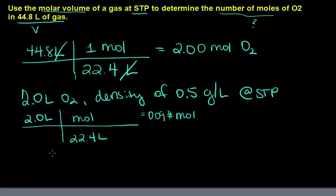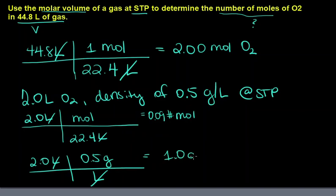And then we could figure out the grams the same way. 2.0 liters, 0.5 grams per liter. And that could be 2 times 0.5. Easy. These cancel and those cancel. That could be 1.0 grams.